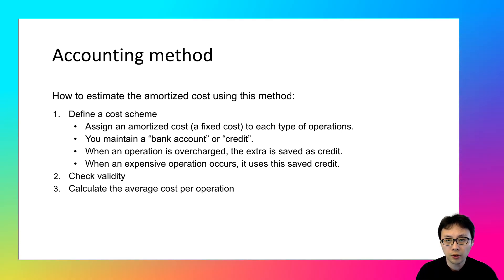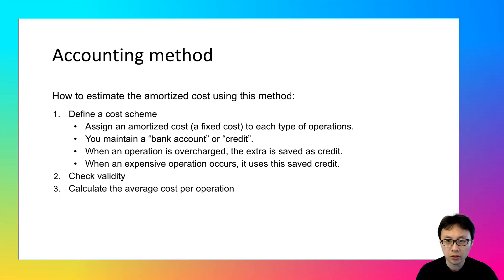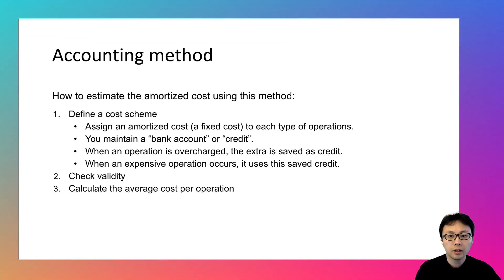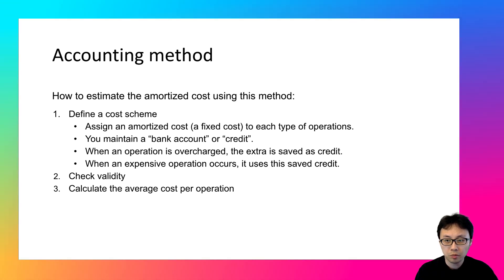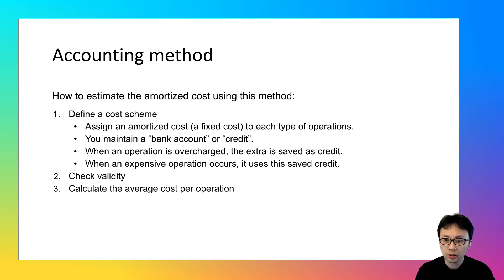The first step is to define a cost scheme — assigning an amortized cost to each type of operation. There might be more than one type of operation. In this scheme, you assign a fixed cost to each type to represent their time complexity. You then maintain a bank account associated with an object of that data structure. When an operation is executed, you charge the fixed amount corresponding to its operation type. The fixed cost you assigned might be bigger or smaller than its actual cost. If the fixed cost is bigger, the operation is overcharged, and it saves the difference as credit in your bank account.